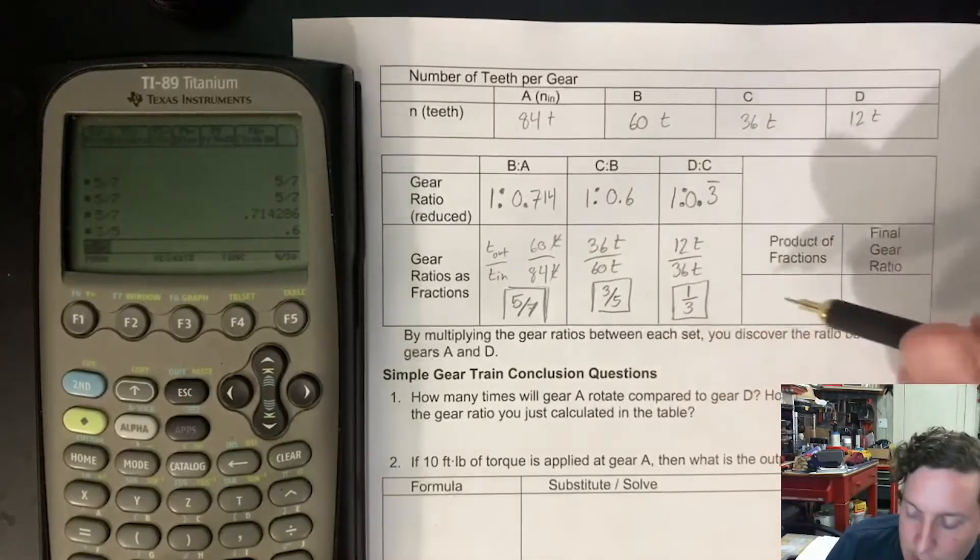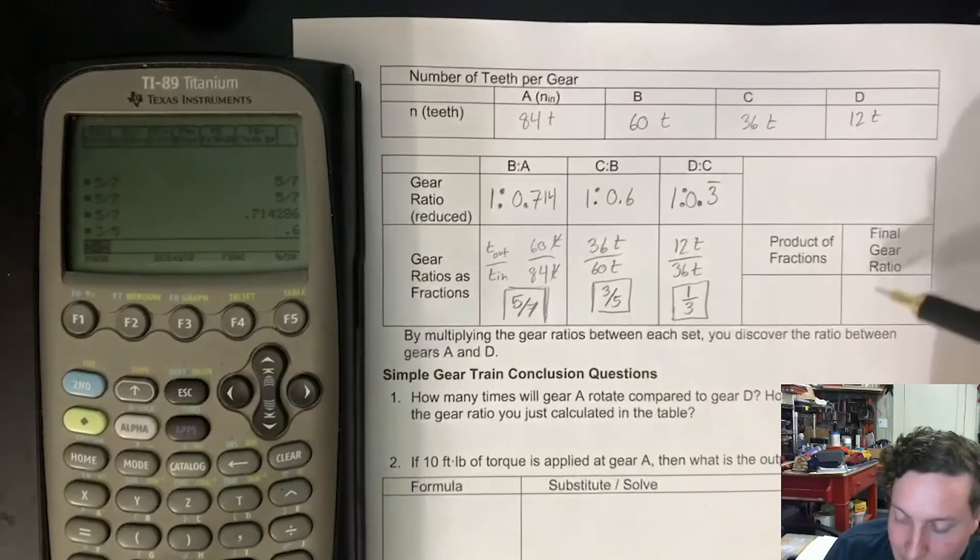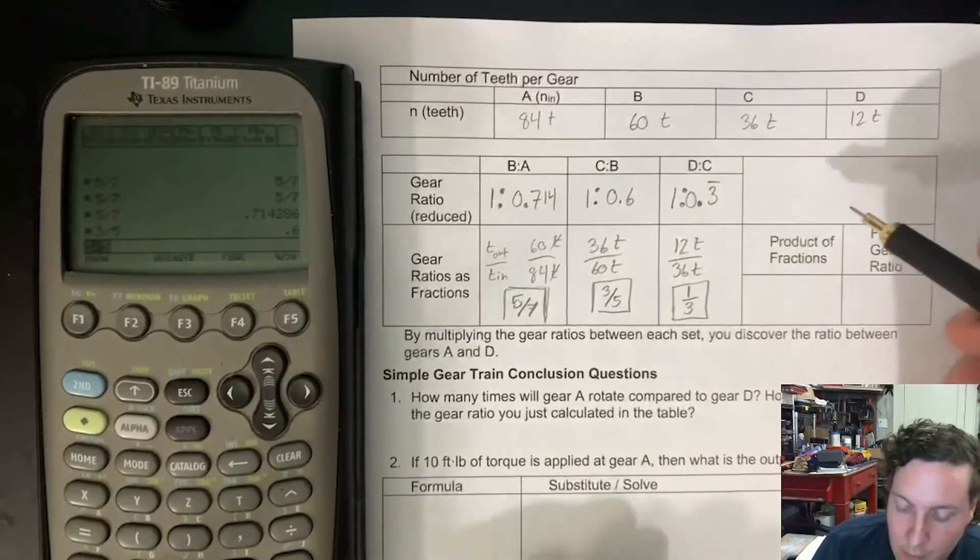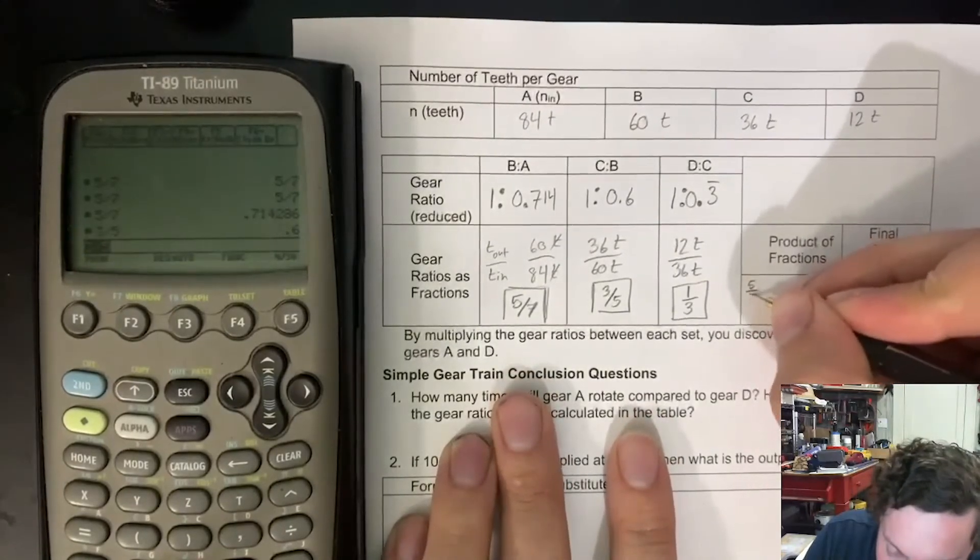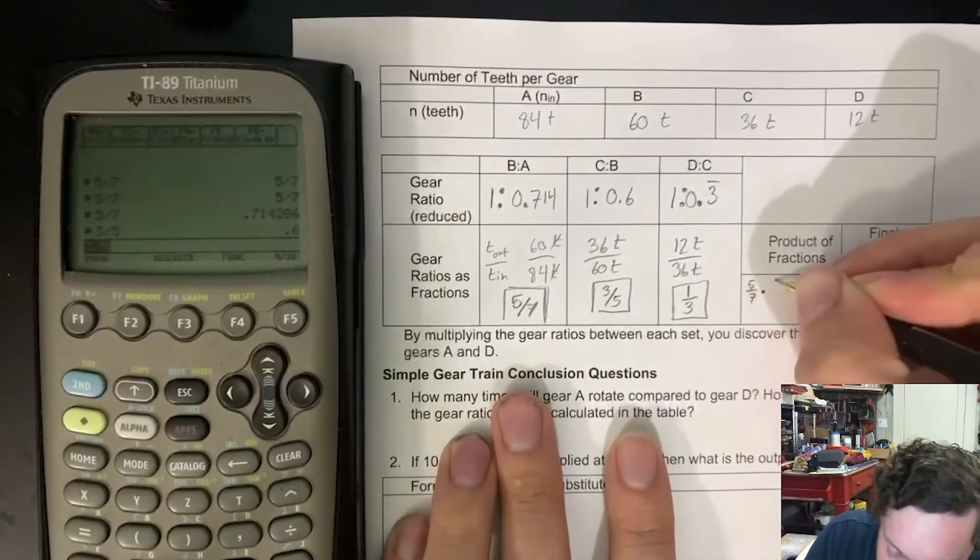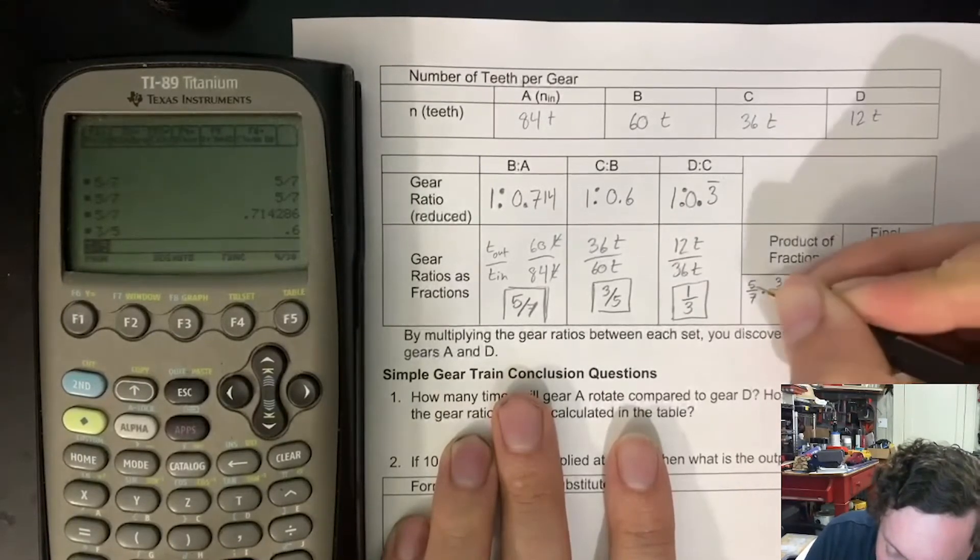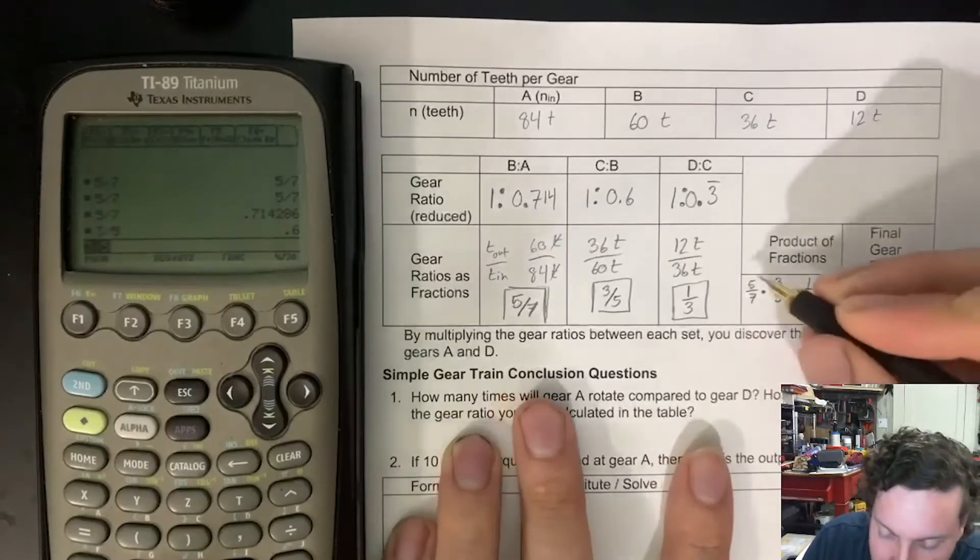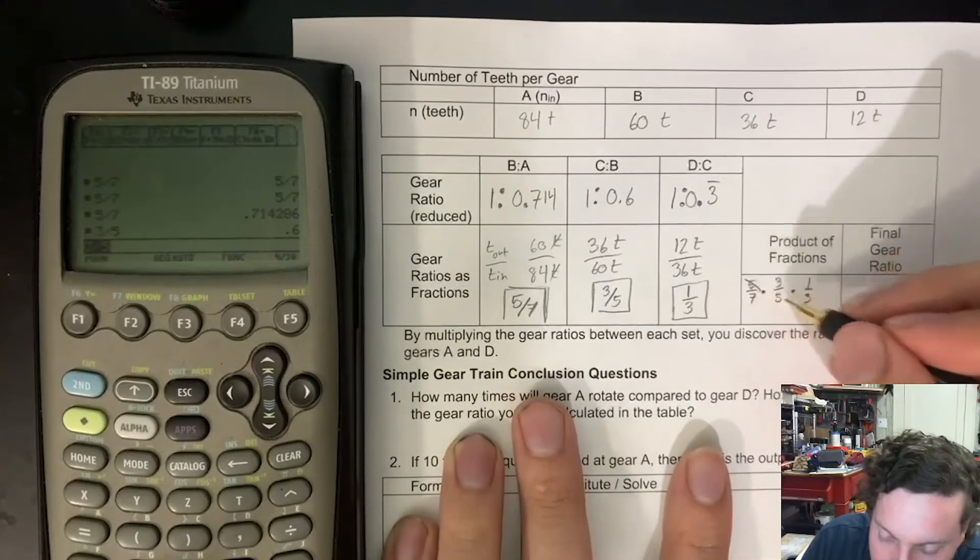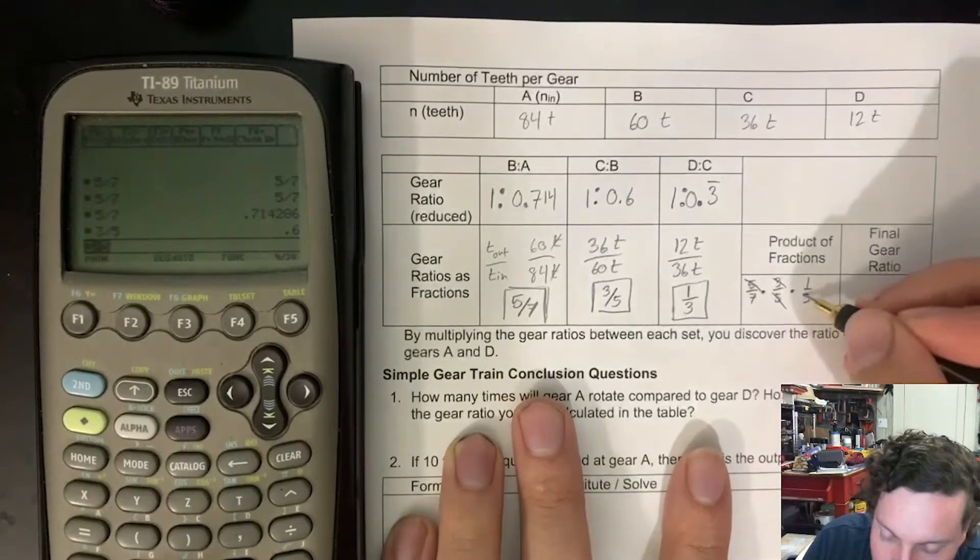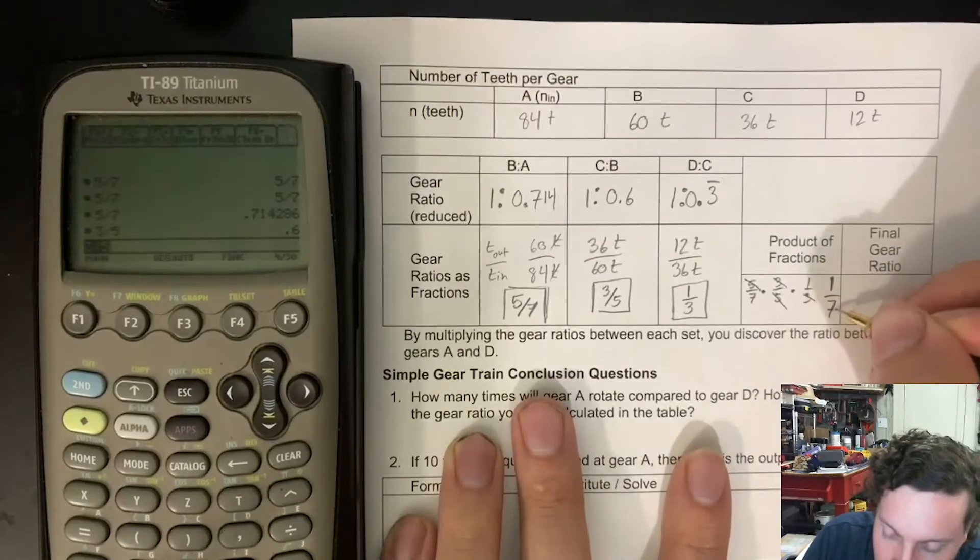So what's left is multiplying our fractions together and finding our final gear ratio. If we multiply these together, the cool thing to remember about fractions is if we take 5 sevenths times 3 fifths times 1 third, we can get some cross multiplications that cancel these out. 5 cancels out 5, 3 cancels out 3, we're left with a final ratio of 1 seventh.